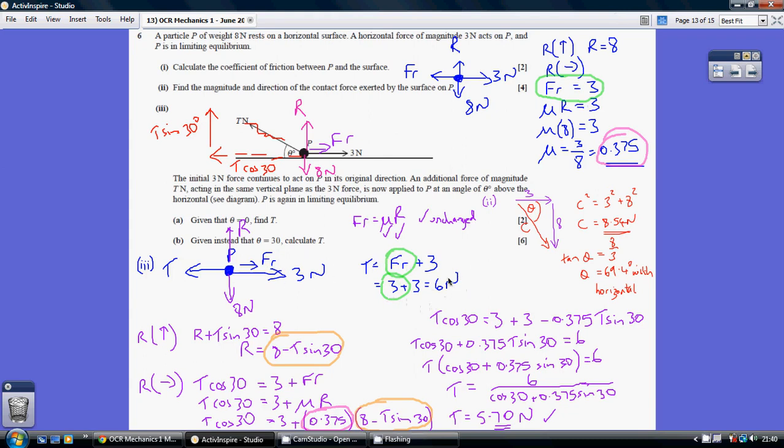Now for part B, we need to reconsider our diagram. We've still got R straight up, the weight straight down, our friction, and our 3 newtons. I've broken down this tension into its 2 components: T cos 30 being horizontal, T sin 30 being vertical.